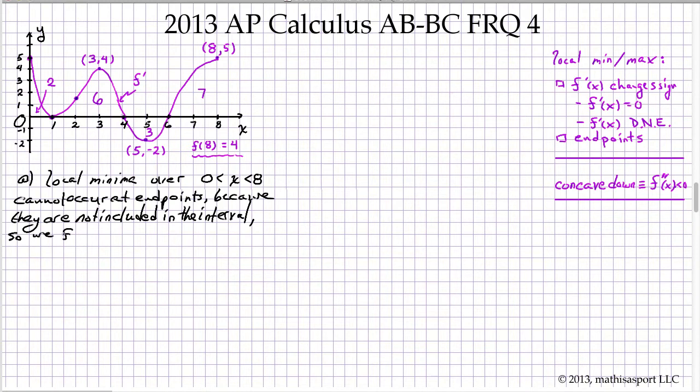And that occurs at x equals 6. So we focus on where f prime changes from negative to positive as x goes from left to right, which occurs at x equals 6. That's it.